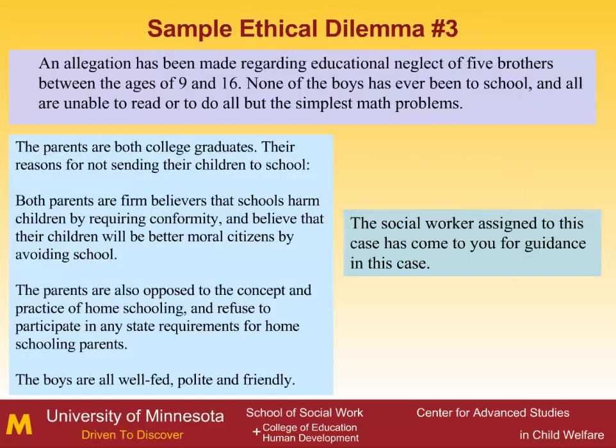We will now go on to sample ethical dilemma number three. An allegation has been made regarding educational neglect of five brothers between the ages of 9 and 16. None of the boys has ever been to school, and all are unable to read or do all but the simplest math problems. The parents, both college graduates, can capably articulate their reasons for not sending their children to school — they are firm believers that schools harm children by requiring conformity, and believe their children will be better moral citizens by avoiding school. The parents are also opposed to homeschooling and refuse to participate in any state requirements for homeschooling parents. The boys are all well-fed, polite, and friendly. The social worker assigned to this case has come to you for guidance.